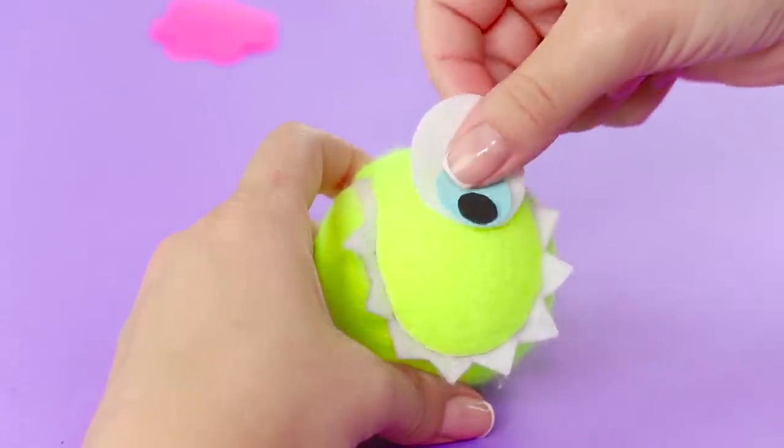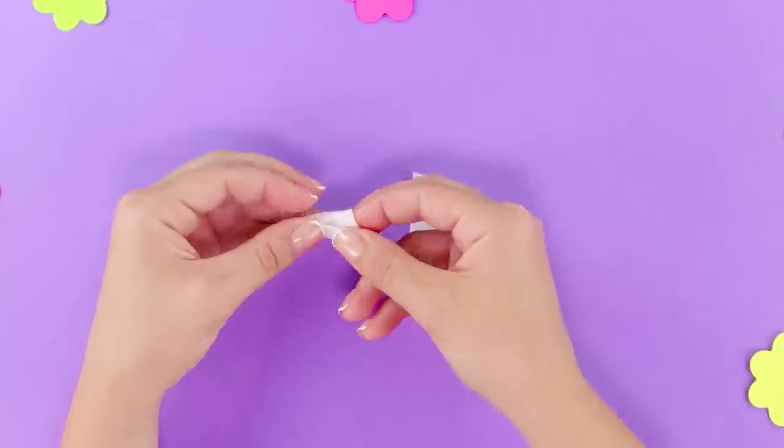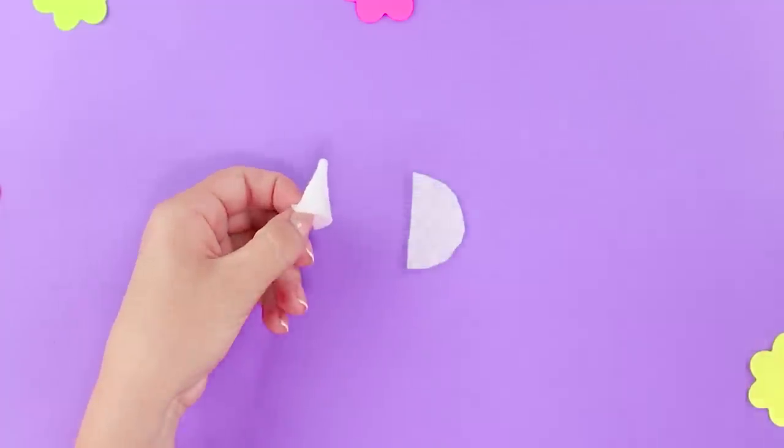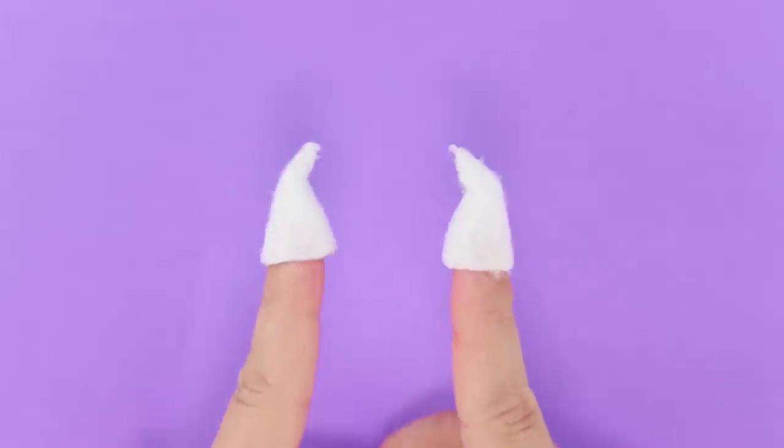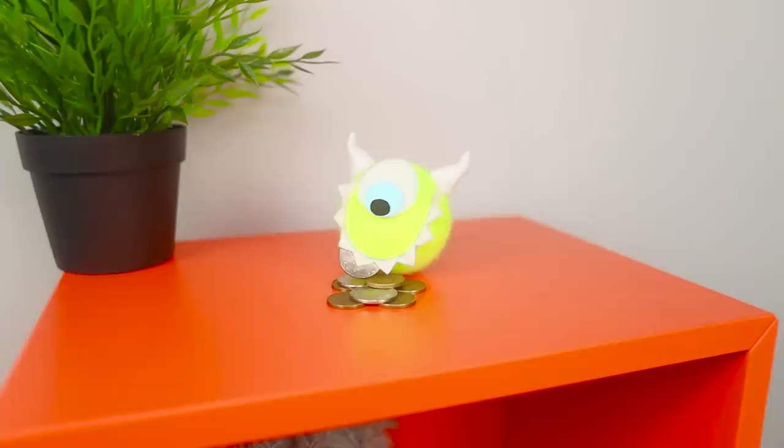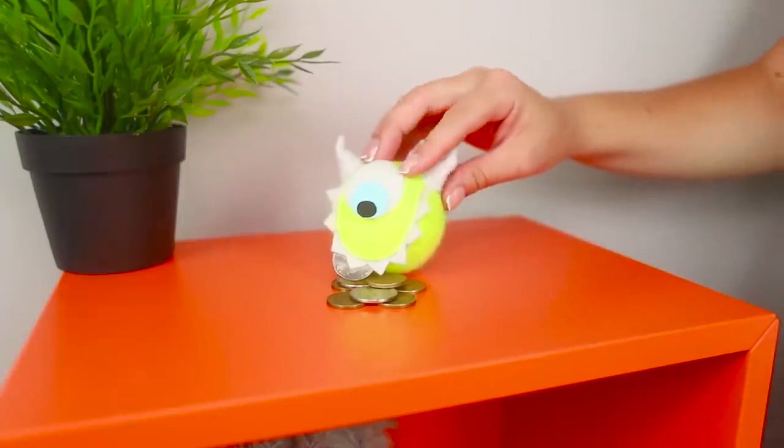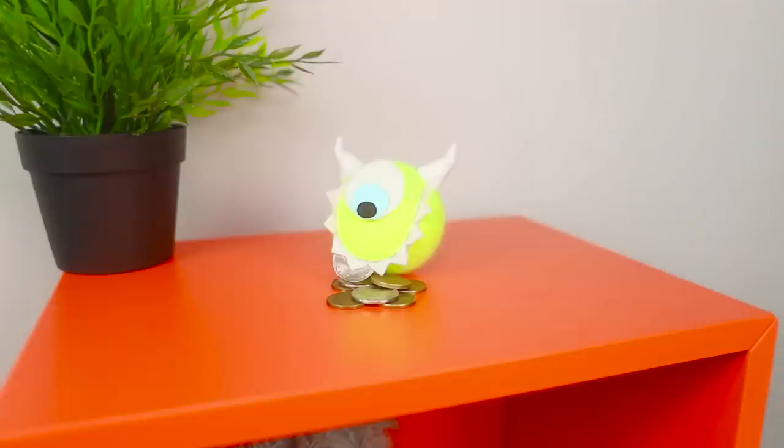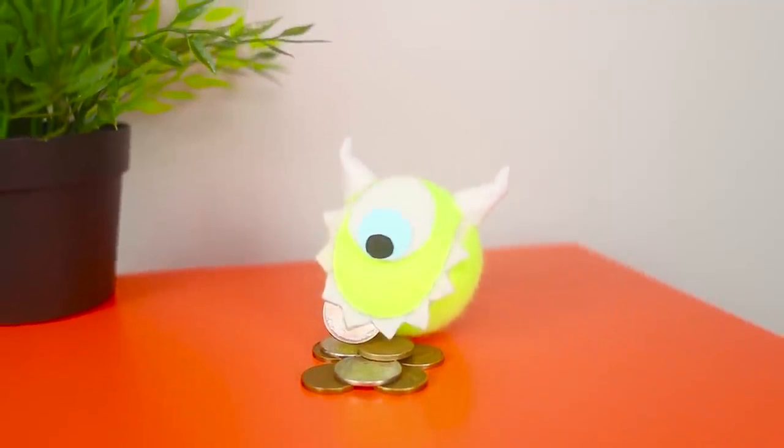Glue the eye in the middle. Fold pieces of foam-aran with a cone. Attach the horns to the ball. How wildly nice our Mikey turned out to be! You can make a great cash for money from this terribly nice monster.